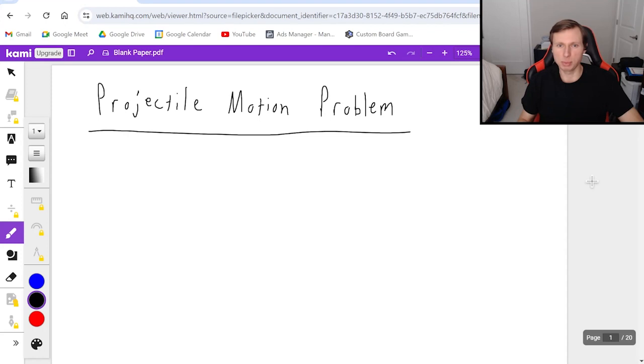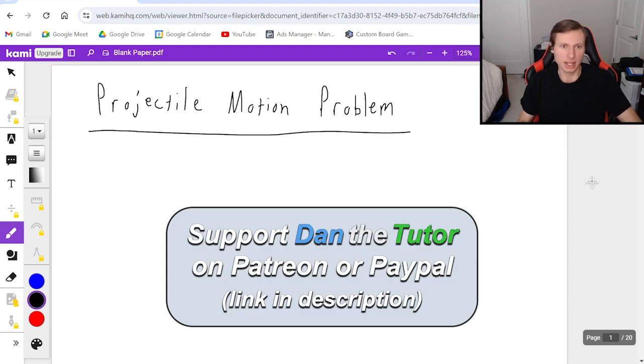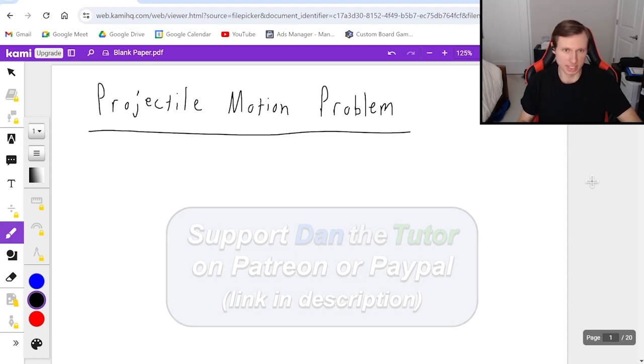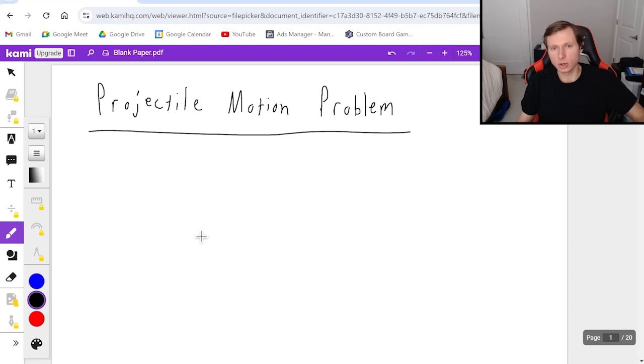In today's video we're going to be looking at a projectile motion problem using 2D kinematics. This one in particular is going to be on not flat ground, meaning there will be an elevation difference which obviously is going to make the problem harder and we're going to have a fun time solving this. So let's go ahead and get started with the problem.